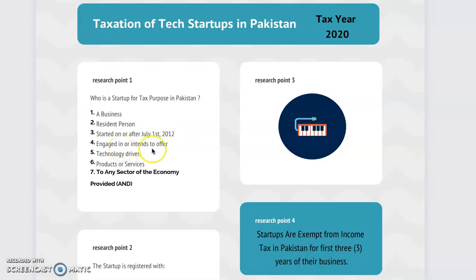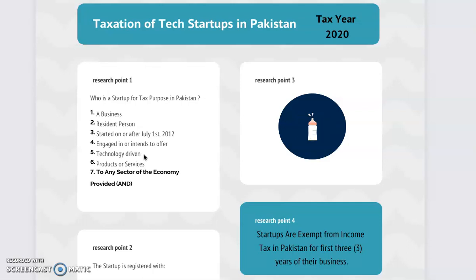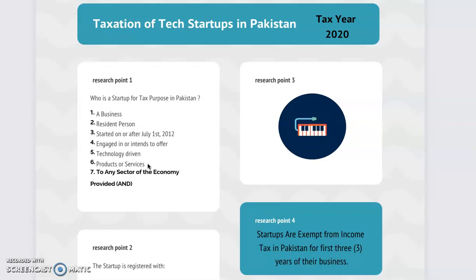The business should be engaged in, or intend to offer — meaning it may have started or is planning to start with a minimum viable product — technology-driven products and services. This is the most important distinguishing factor. Since this definition has only been in the tax law for two tax years, there is no appellate or legal opinion yet on what exactly constitutes technology-driven products or services. For example, if you provide online marketing, this may not be considered a technology-driven product or service, though you may argue that it is.